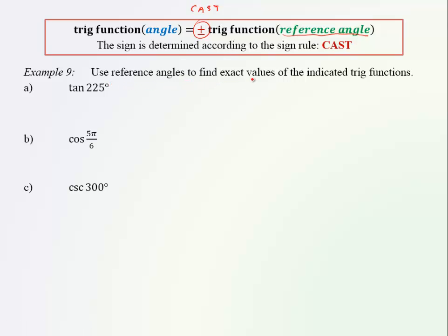Use reference angles to find exact values of the indicated trig functions. 'Exact' indicates that we are going to use special triangles rather than a calculator. So tangent of 225 — I know that this is the same as plus or minus, I don't know yet, of tangent of the reference angle.